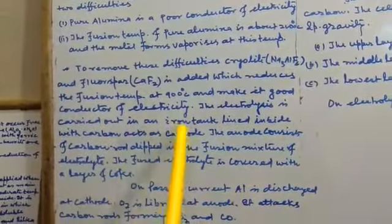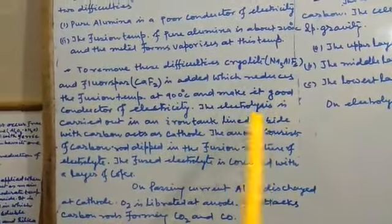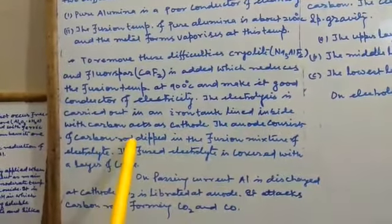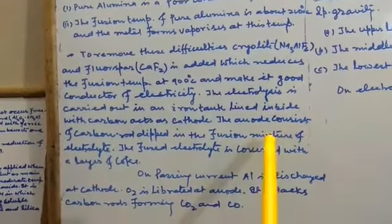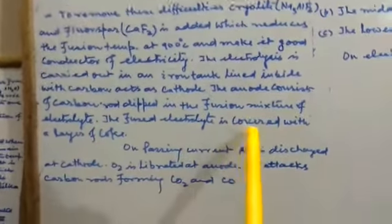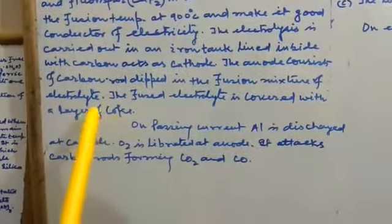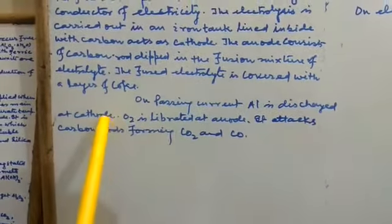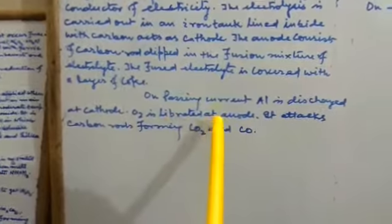The electrolysis is carried out in an iron tank lined inside with carbon, which acts as cathode. The anode consists of carbon rods dipped in the fusion mixture of the electrolyte. The fused electrolyte is covered with a layer of coke. On passing current, aluminum is discharged at cathode and oxygen is liberated at anode.